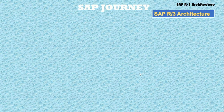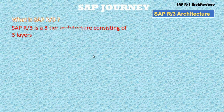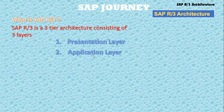Our first topic is: what is SAP R3 architecture and how does it look? SAP R3 is a three-tier architecture consisting of three layers. The first layer is the presentation layer, the second layer is the application layer, and the third layer is the database layer.